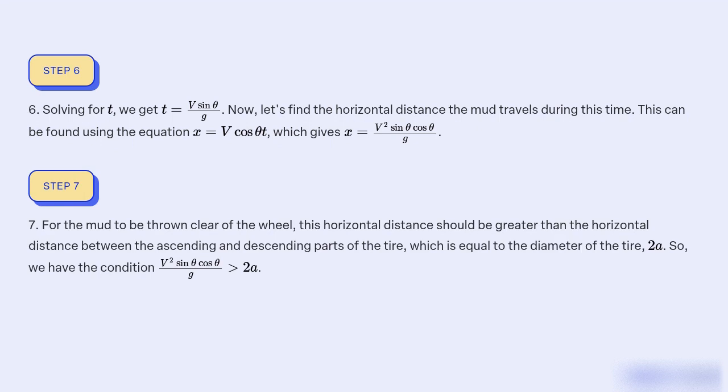7. For the mud to be thrown clear of the wheel, this horizontal distance should be greater than the horizontal distance between the ascending and descending parts of the tyre, which is equal to the diameter of the tyre, 2a. So, we have the condition V² sin θ cos θ divided by g.